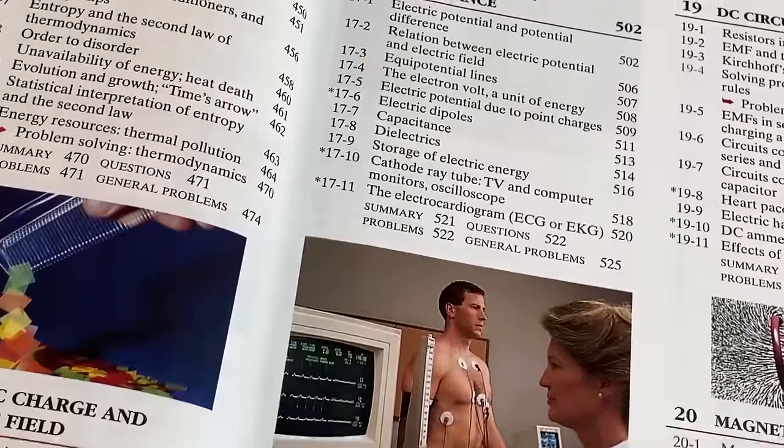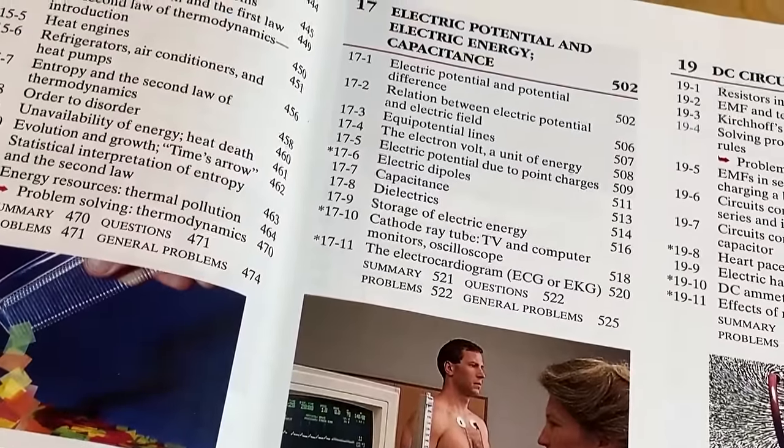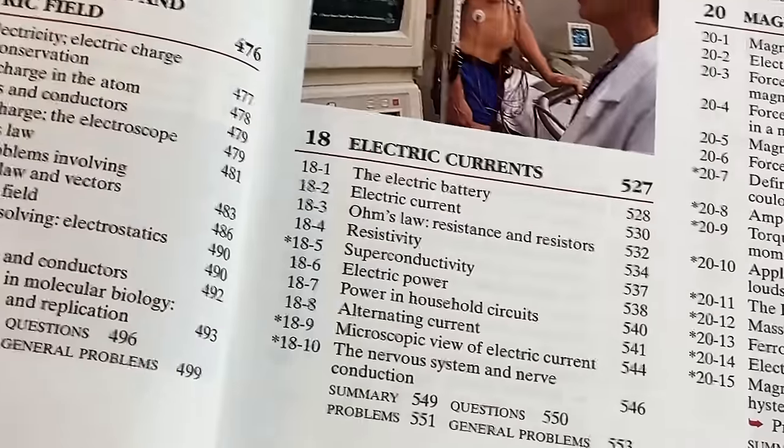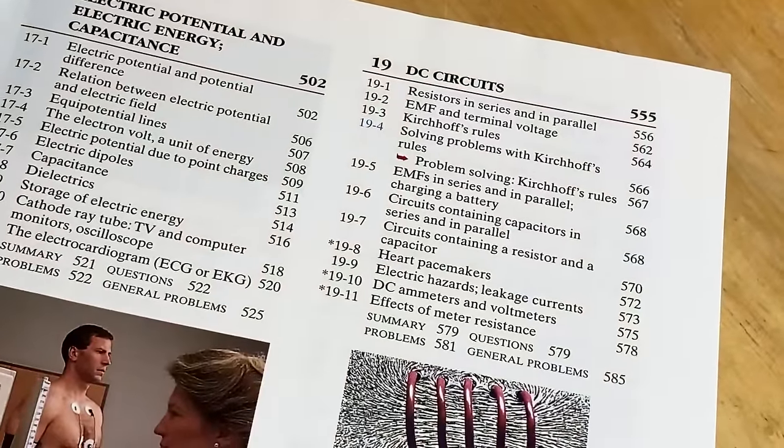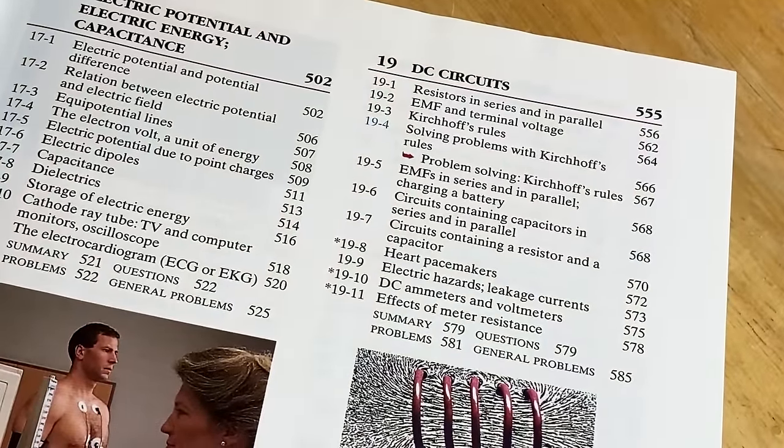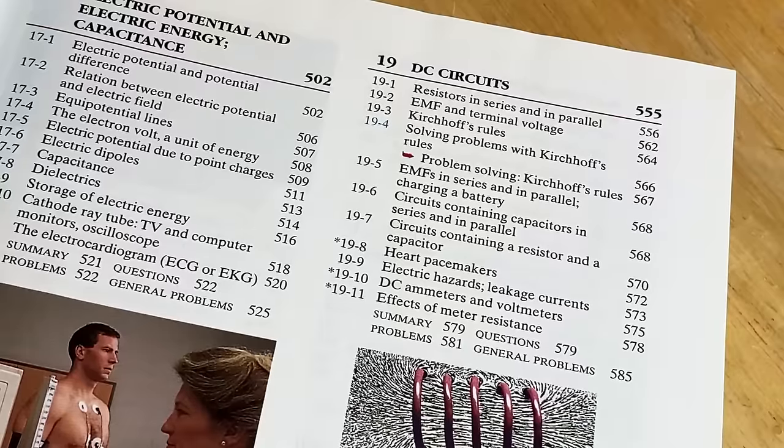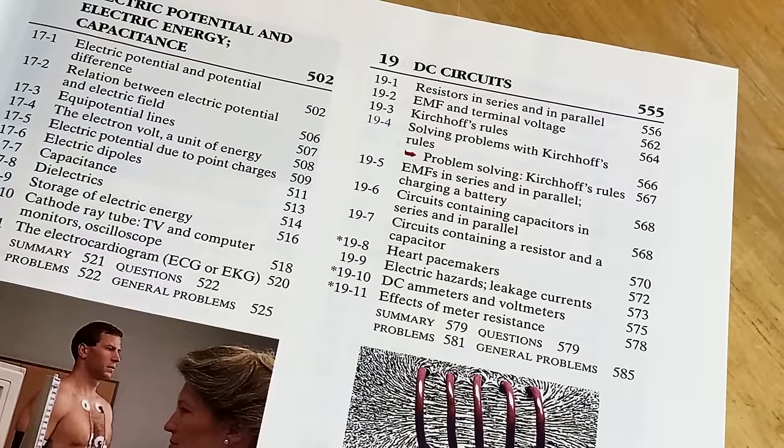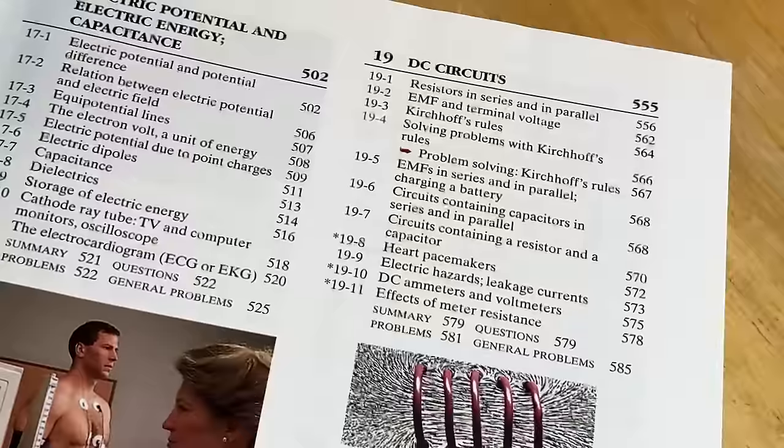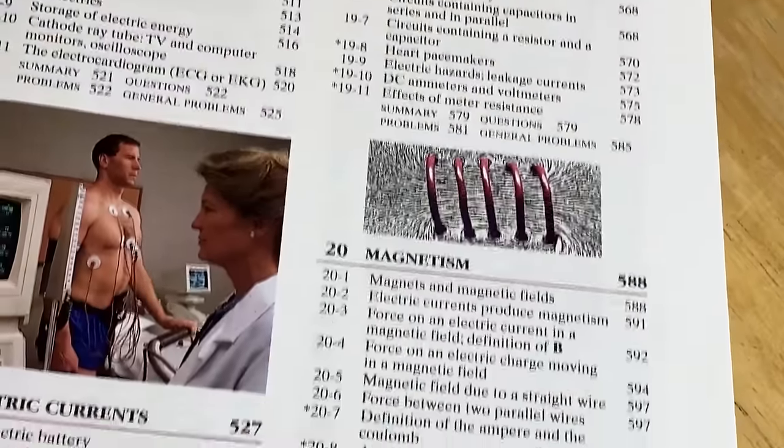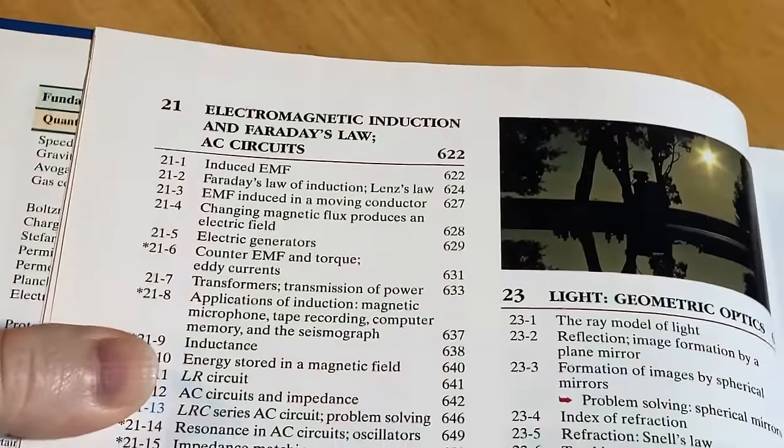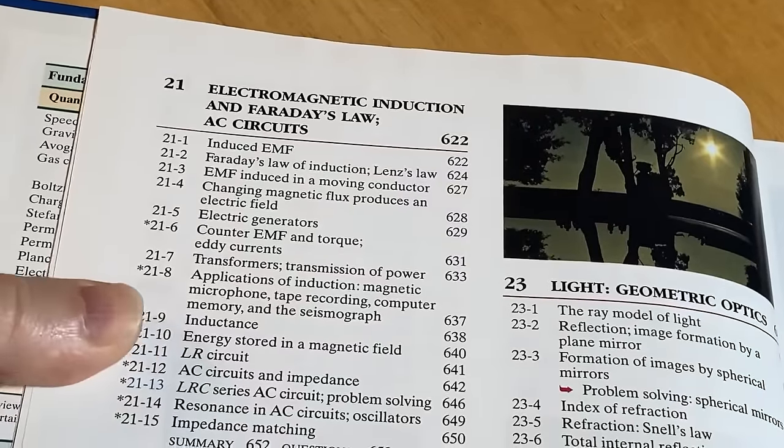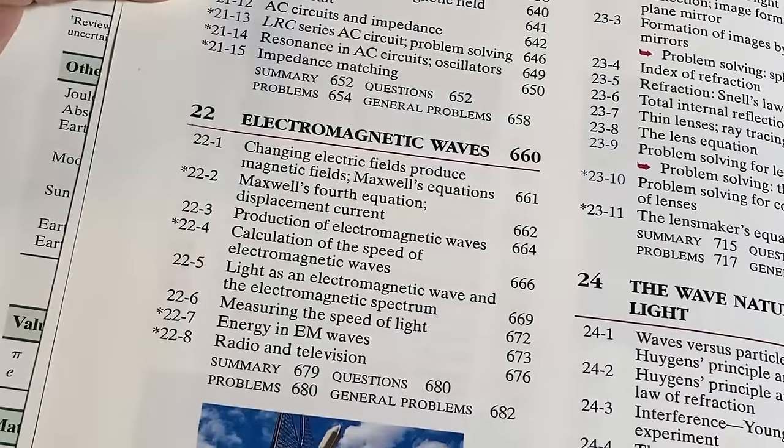Electric charge and electric field, then we have electric potential and electric energy. Electrical currents. DC circuits. I have a friend who's not a physics guy but he knows so much about electricity. He can build things - he's built several things, all kinds of circuits and stuff for actual things he uses in the real world. It's pretty amazing. Magnetism - always think of the X-Men for some reason when you think about physics. Electromagnetic induction and Faraday's law, AC circuits. Electromagnetic waves.